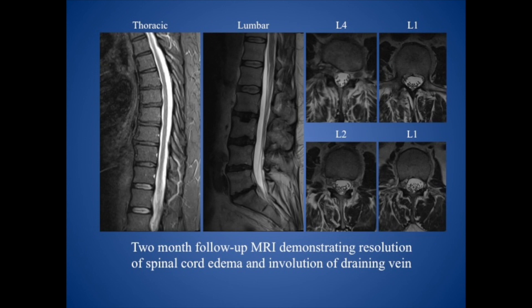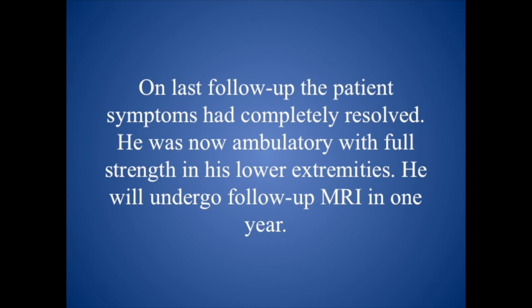MRI of the thoracic and lumbar spine two months after the endovascular procedure shows complete resolution of the spinal cord edema. There are no more intradural vessels and the large abnormal vein is no longer present. Most importantly, the patient recovered all his function — he was able to ambulate and all sphincter and sexual dysfunction have completely resolved.